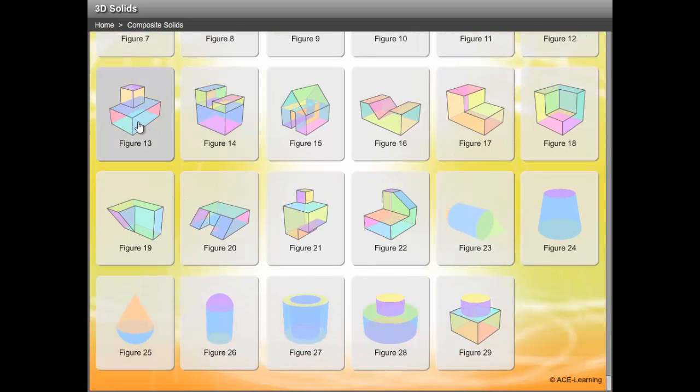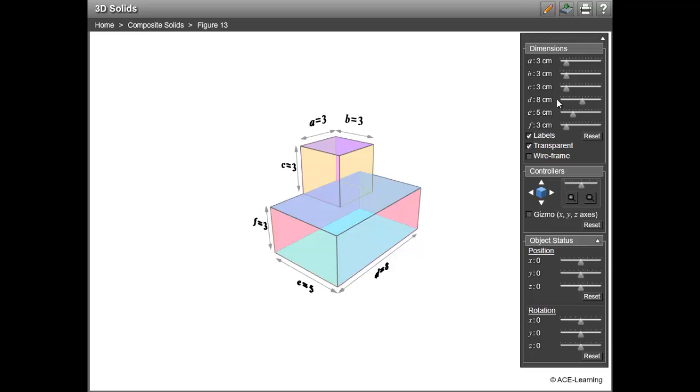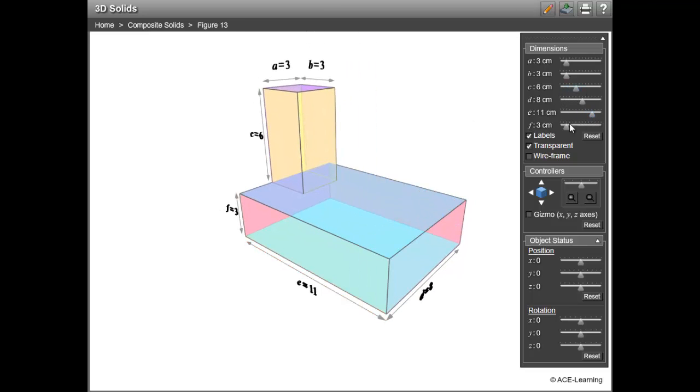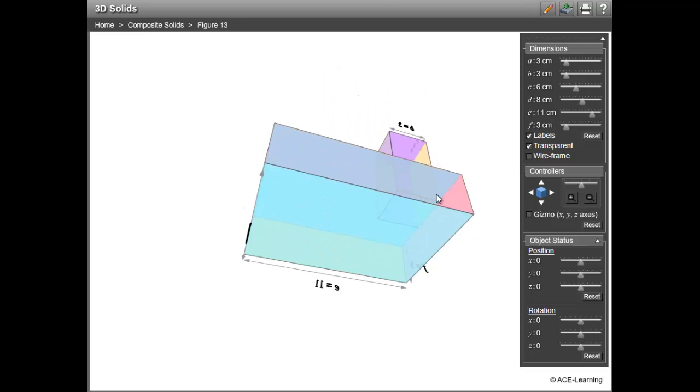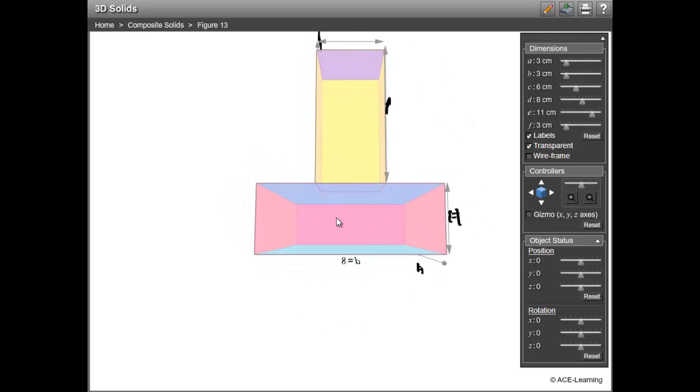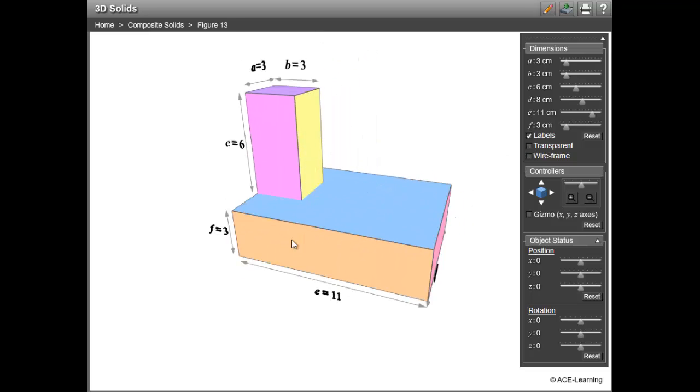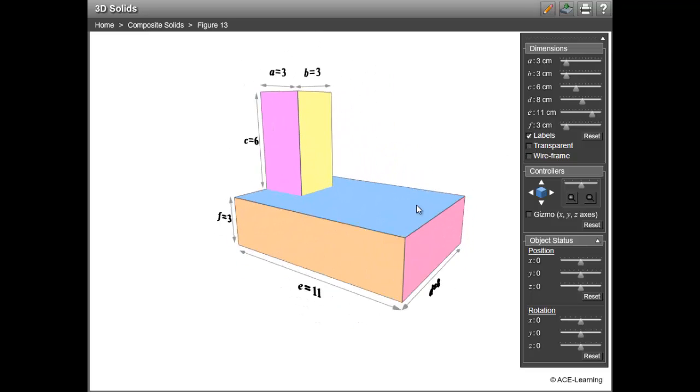To begin, select a solid. You can modify the solid any way you want it, rotate it, even magnify it. If you need a plan view, side or front elevation view, no problem. If a wireframe is what you desire, by all means.